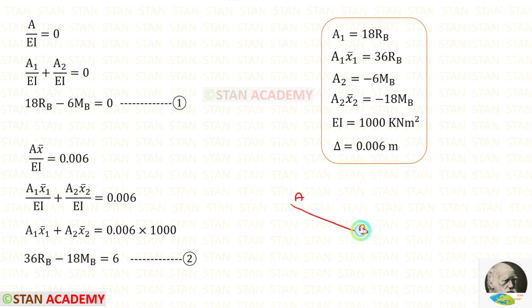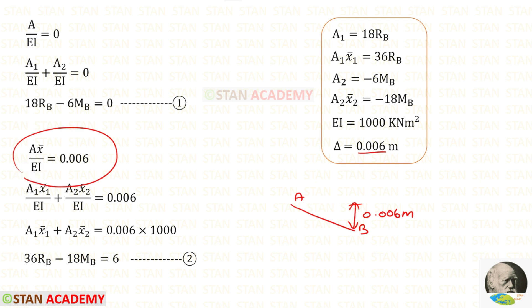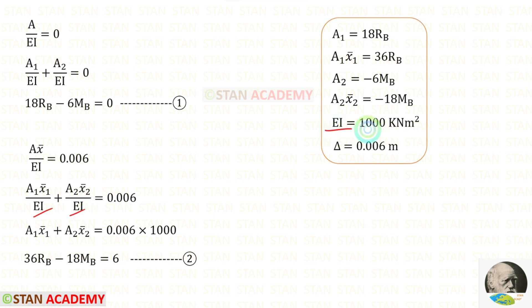Support B sinks by 0.006 meters, so the sum of (area × x̄) divided by EI equals 0.006. Checking levels — point A is higher than point B, so the settlement is applied as positive. With EI = 1000 taken to the other side, applying the values of Area 1 × x̄₁ and Area 2 × x̄₂: 36Rb − 18Mb = 6. This is equation 2.